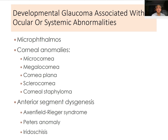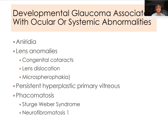Developmental glaucoma associated with ocular or systemic abnormalities can involve microphthalmos, corneal abnormalities such as microcornea, megalocornea, corneal plana, sclerocornea, and corneal staphyloma. Anterior segment dysgenesis or anterior segment cleavage syndrome includes Axenfeld-Rieger syndrome, Peter's anomaly, and iridoschisis. Lens anomalies include congenital cataracts, lens dislocation, and microspherophakia. Phacomatoses include Sturge-Weber syndrome and neurofibromatosis type 1.